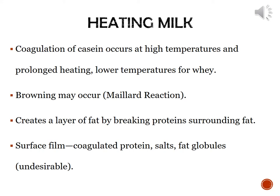Some browning can occur through the Maillard reaction — this involves the heating of sugar and protein, and since both are found in relatively high quantities in milk, it's easy for them to interact with one another and become brown. When fat is heated, the proteins surrounding the fat in the milk break down and release the fat, causing fat molecules to rise to the top, creating an undesirable surface film that includes coagulated whey protein, some salts, and large droplets of fat.